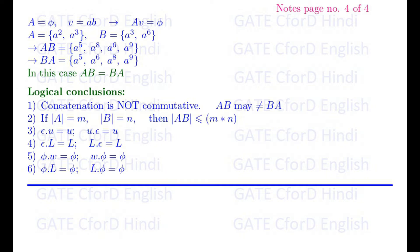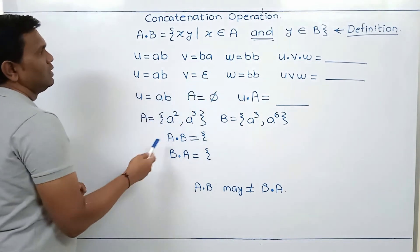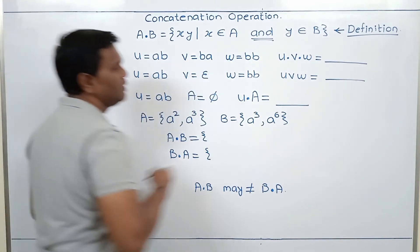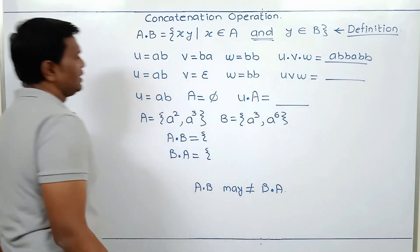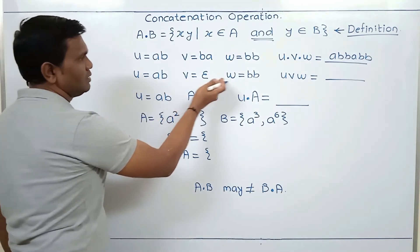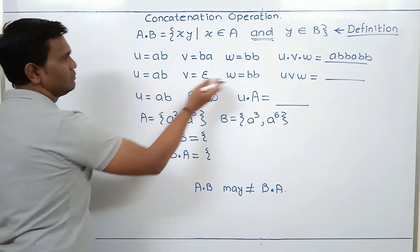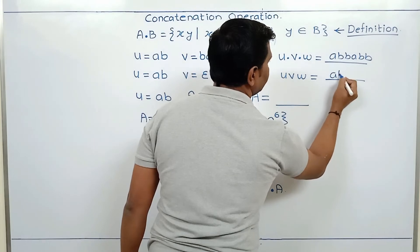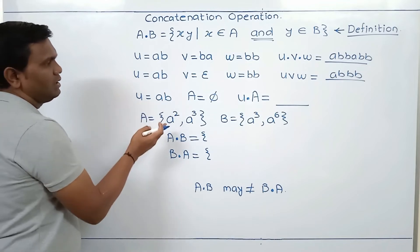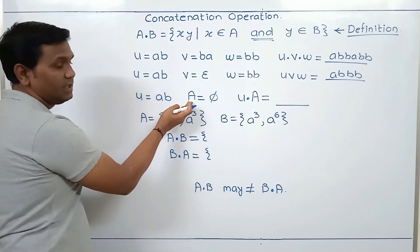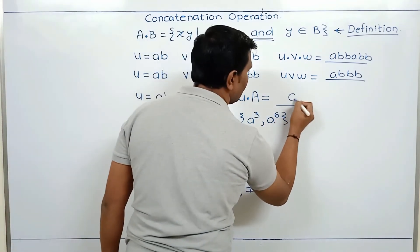We can concatenate more than two strings as well. For example, U = AB, V = BA, W = BB gives UVW = ABBA BB. When U = AB, V = ε, W = BB, the output UVW = ABBB. Also, if string U = AB and language A = φ (empty set), then AB·φ = φ.